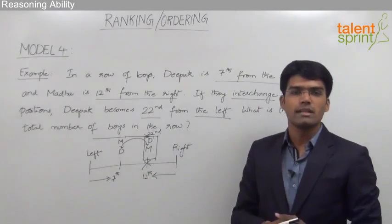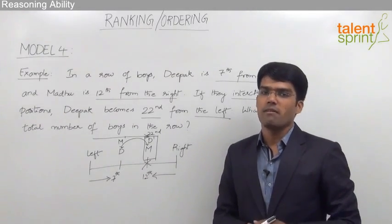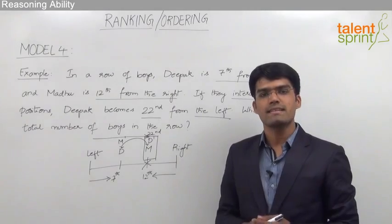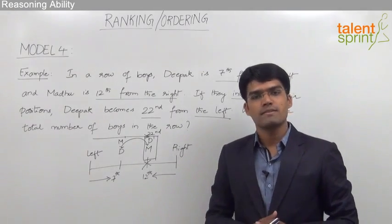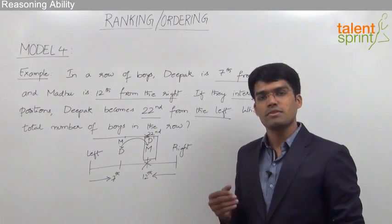As we have discussed in Model 1, when we know the position from two different ends, we can find out the total number of persons as L plus R minus 1, where L is the position from the left end, R is position from the right end.